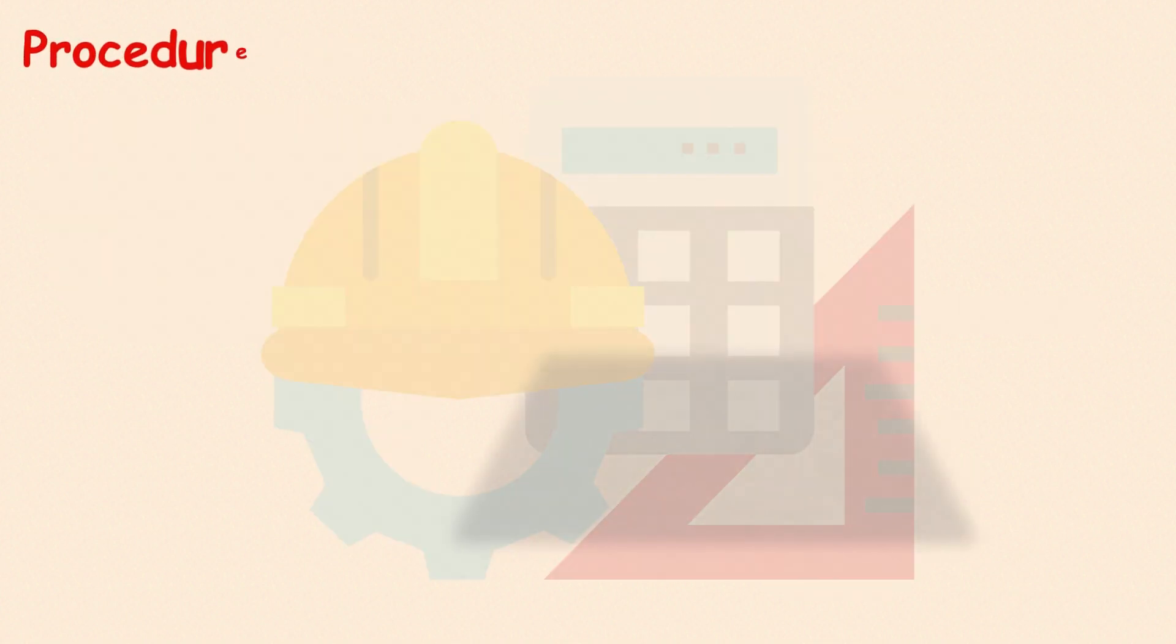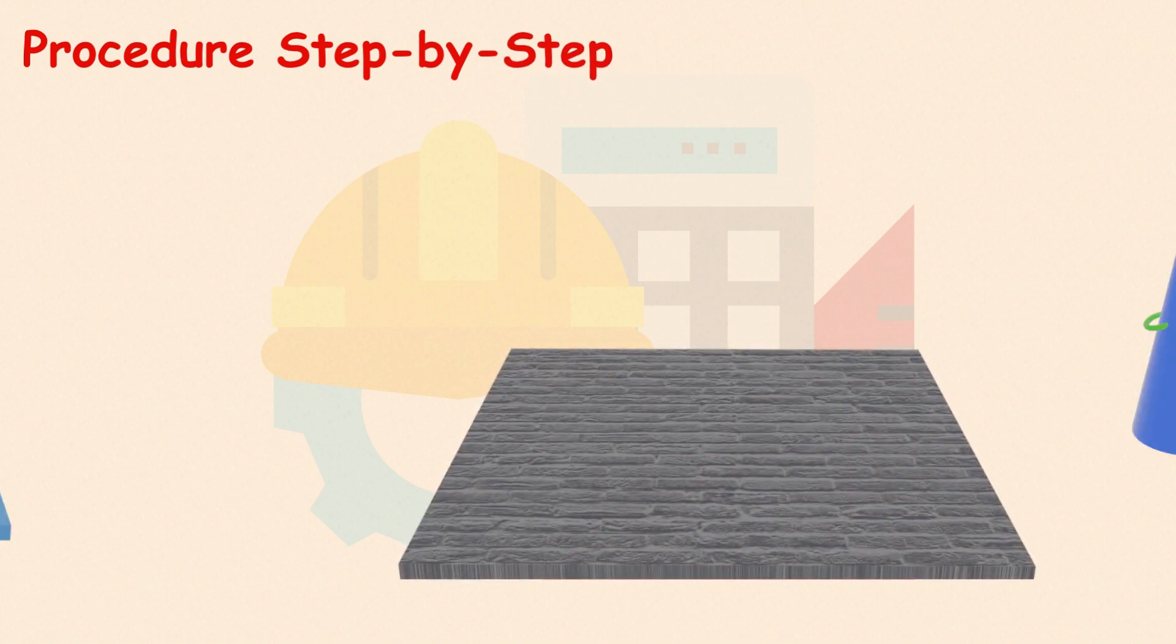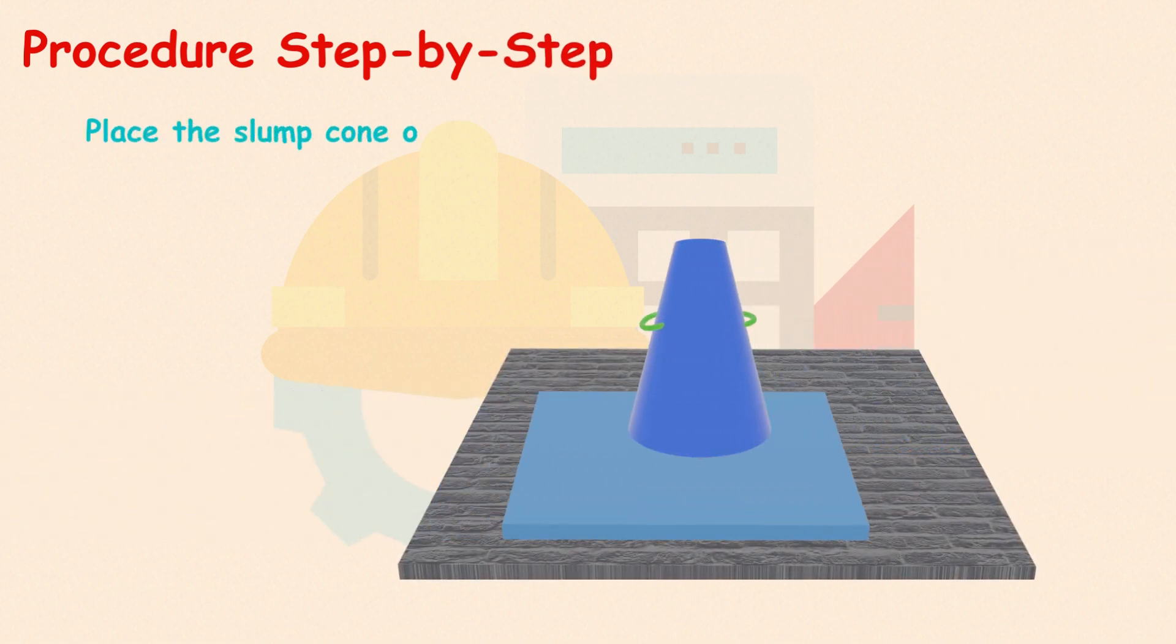Now let's walk through the test procedure. Step 1. Place the slump cone on a clean, flat, and moist base plate. Hold it firmly in place.